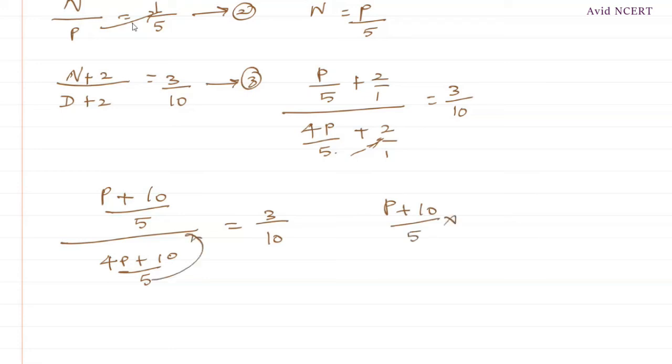This can be written as reciprocal. So, 5 by 4P plus 10 equals 3 by 10. So, 5 gets cancelled. Which is P plus 10 divided by 4P plus 10 equals 3 by 10.